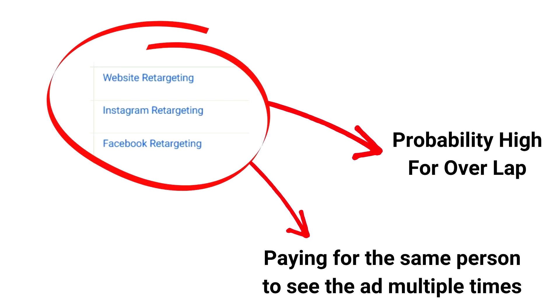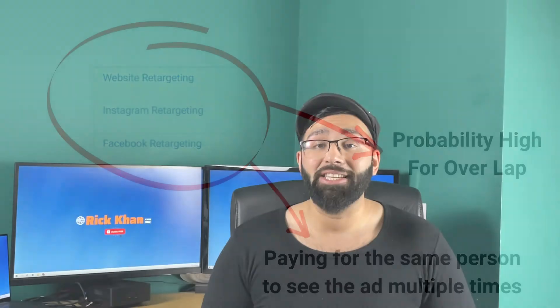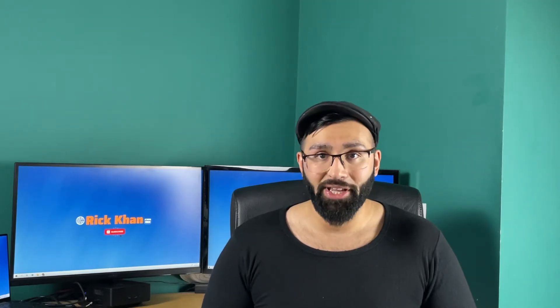What's really happening here is that you're paying for the same person to see the ad twice. This is driving your ad cost up and fatiguing your ads faster. So the question is: what can you do to avoid this?